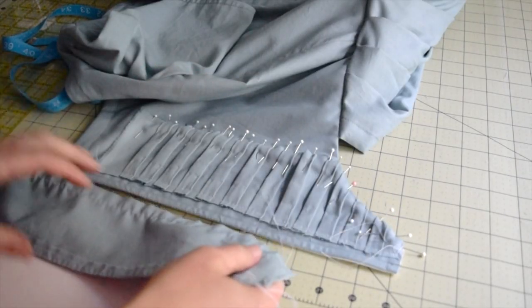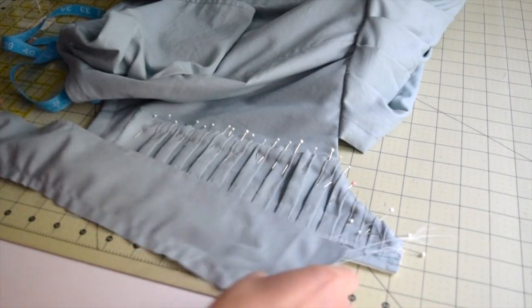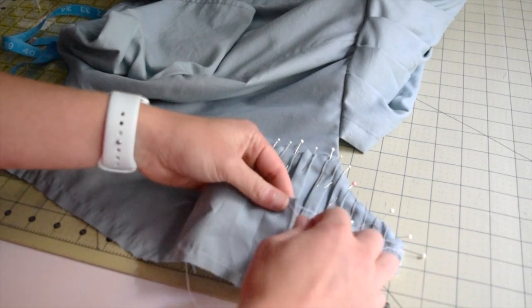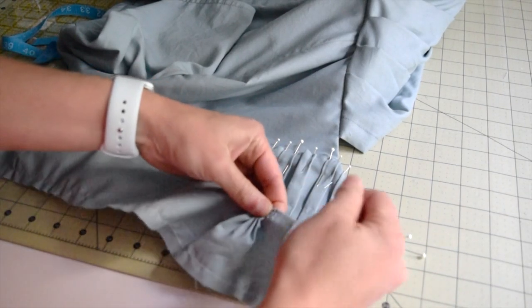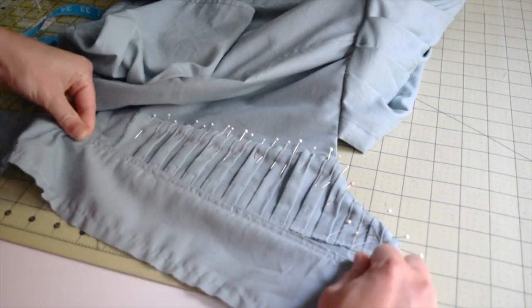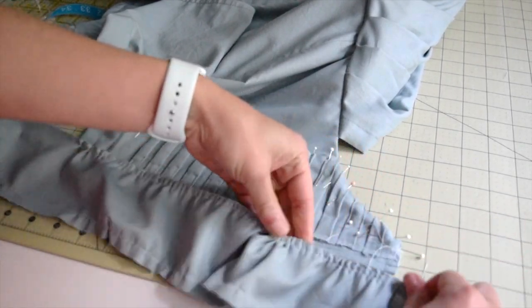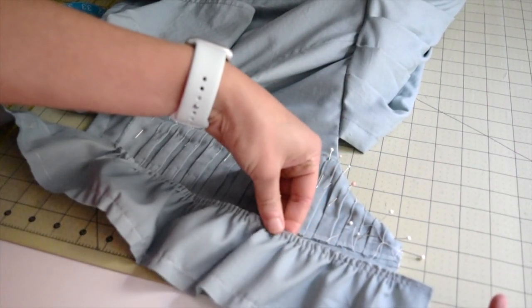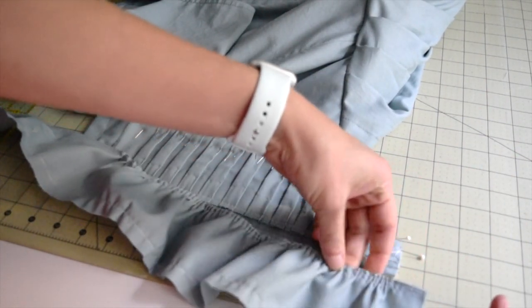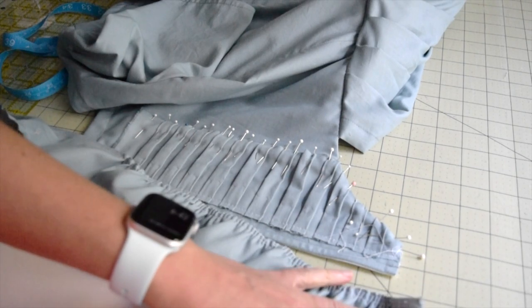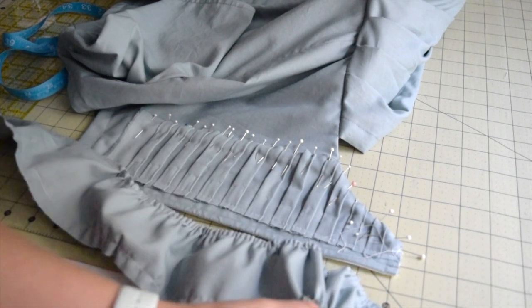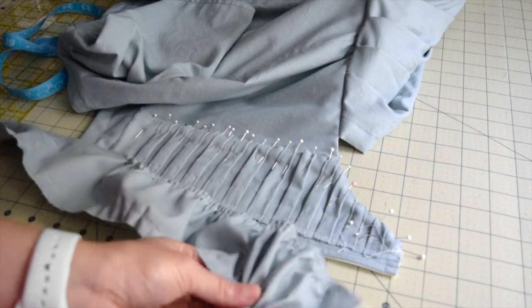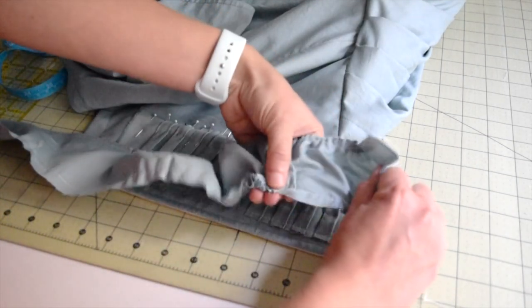So now we have our gathering stitches and we're literally just going to pull this down. It doesn't need to be gathered a ton, just a little bit, ever so slightly. And then I'll gather this to kind of match it on the other side so it's not floating out there.